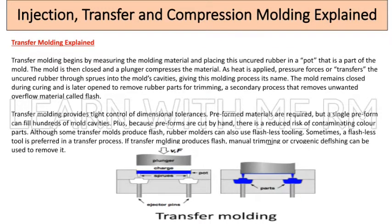Transfer molding provides tight control of dimensional tolerances. Preformed materials are required, but a single preform can fill hundreds of mold cavities. Because preforms are cut by hand, there is a reduced risk of contaminating color parts. Although some transfer molds produce flash, rubber molders can also use flash-less tooling, which is sometimes preferred in a transfer process.